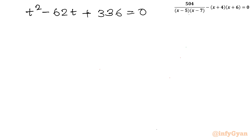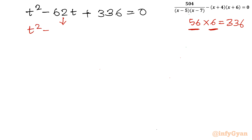I won't use the Sridharacharya quadratic formula. I will use middle-term splitting. I need to split 62 in terms of factors of 336. Since 56 times 6 is 336, I will split 62 as 56 plus 6. So: t² minus 56t minus 6t plus 336 equal to 0.